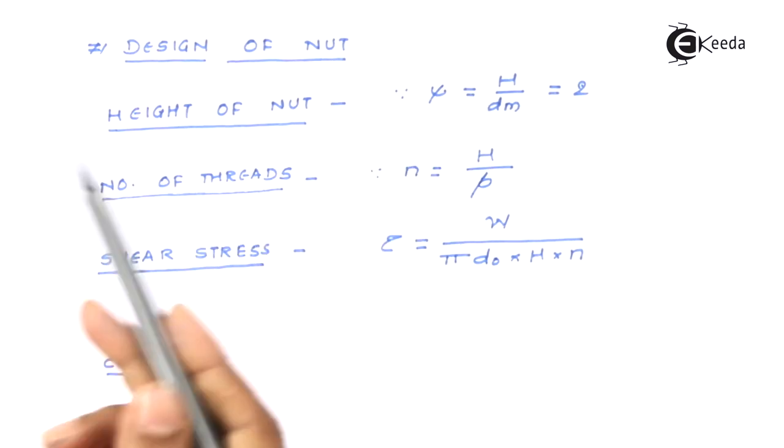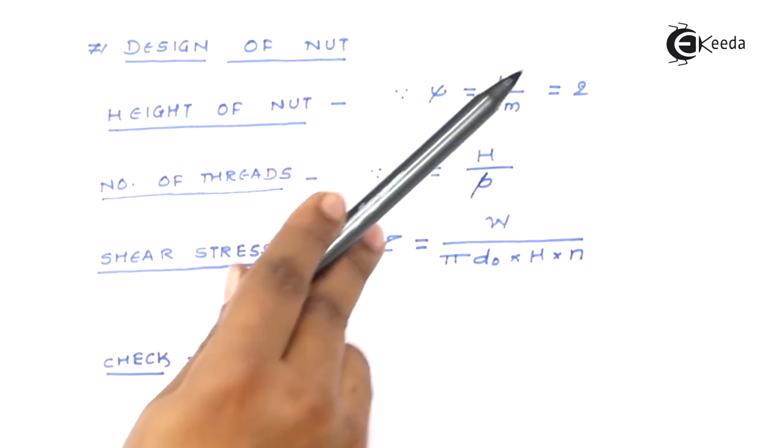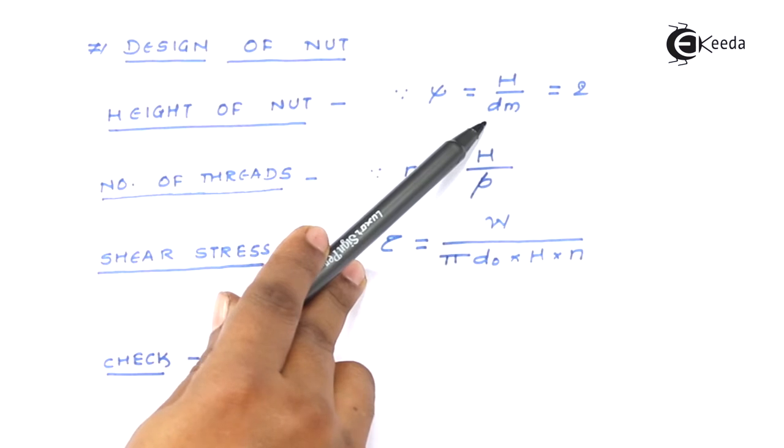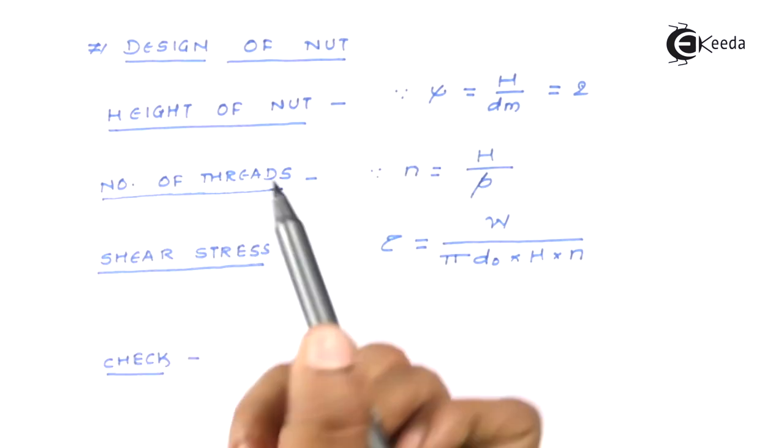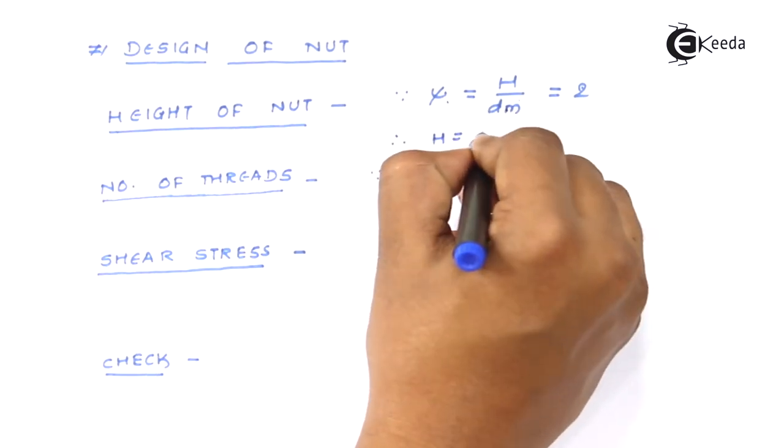It's a standard procedure again. Height of nut is given by this particular equation where psi is equal to H by dm. The psi value generally for our application point of view take at 2. We already know the diameter, the mean diameter.